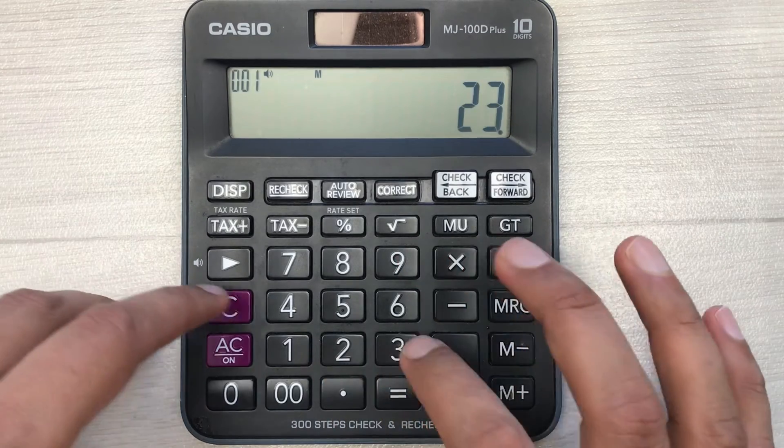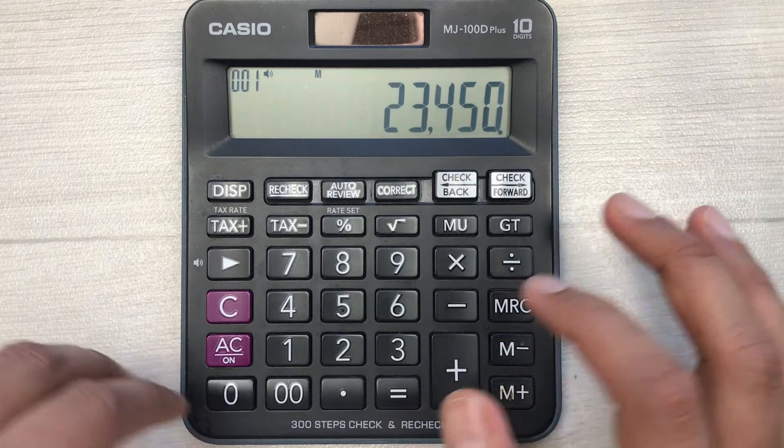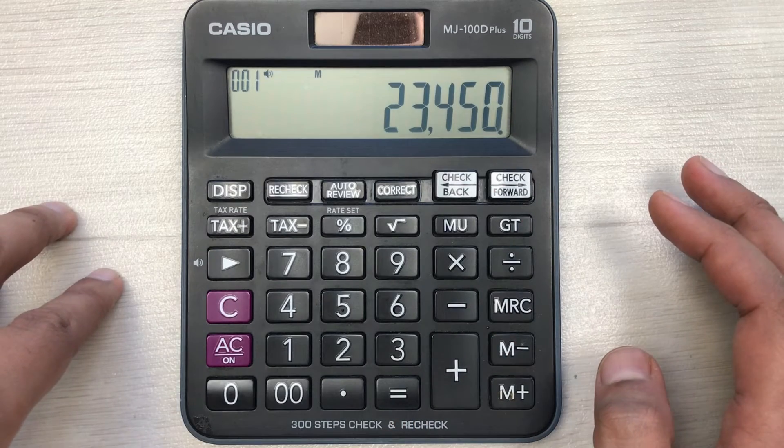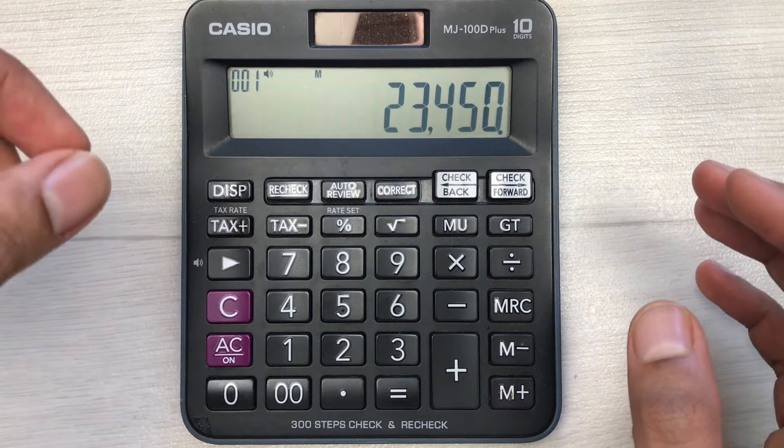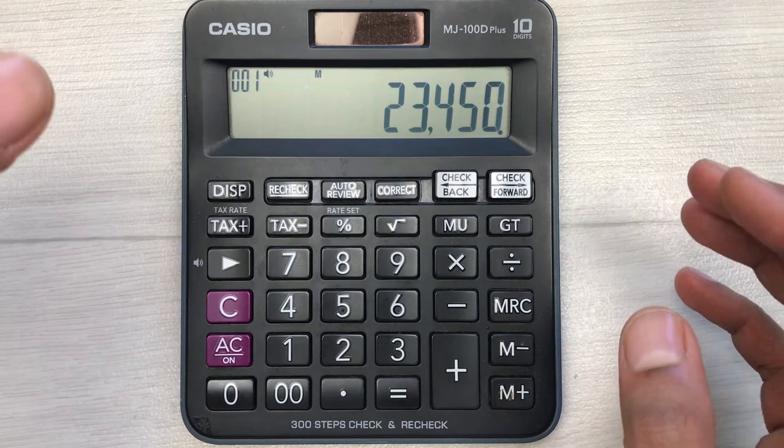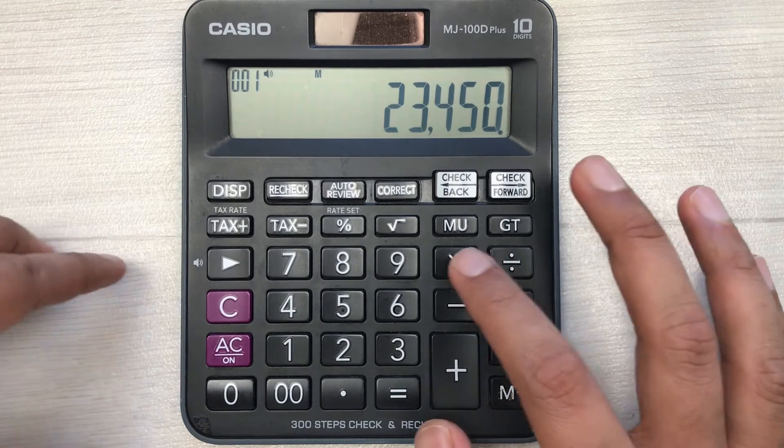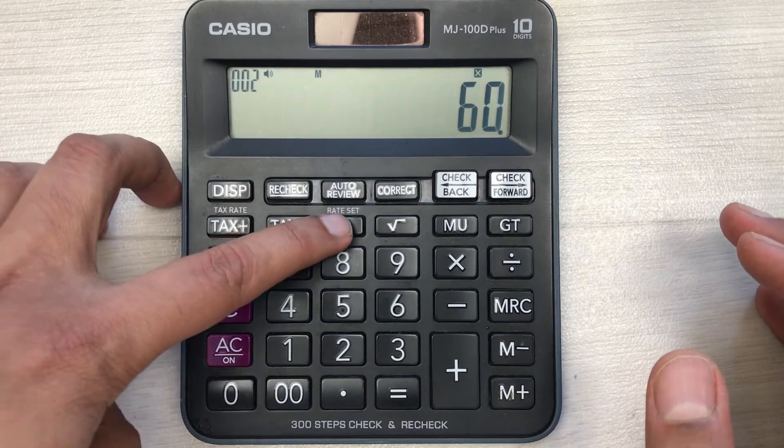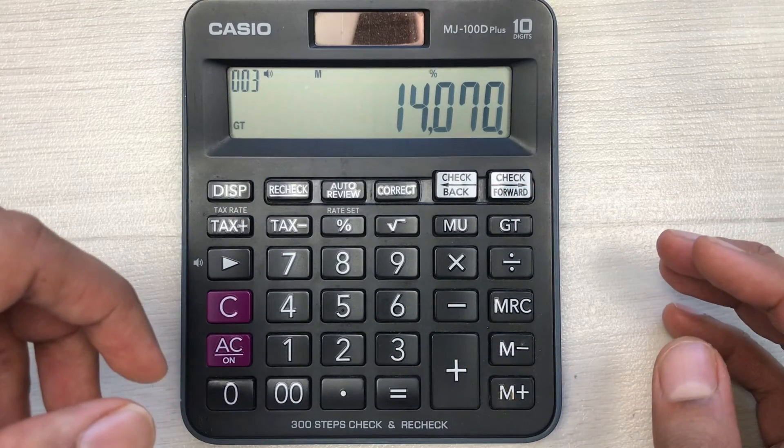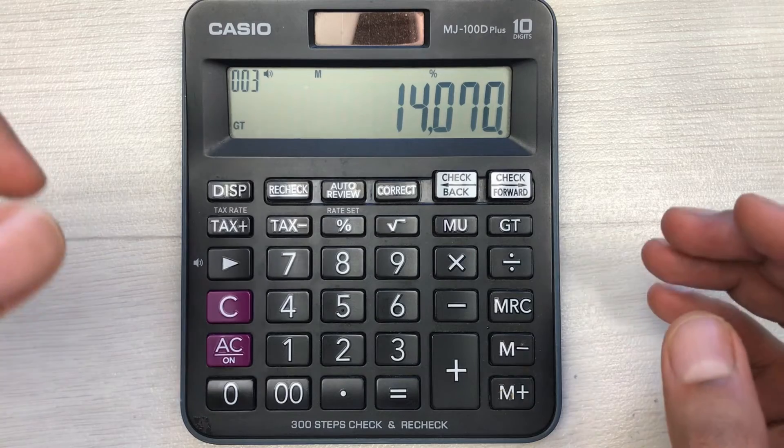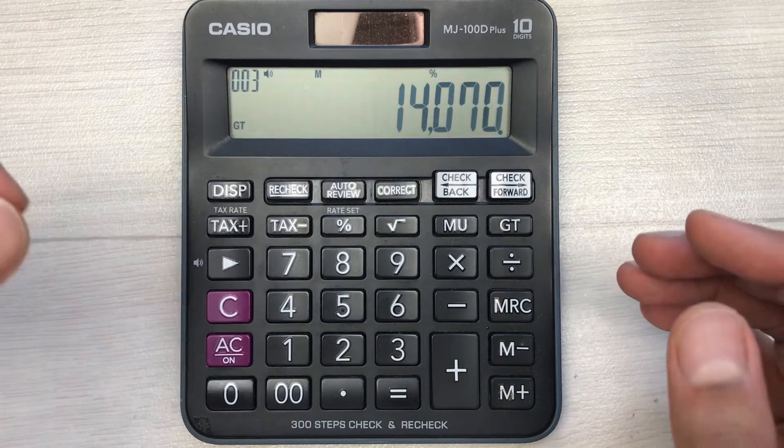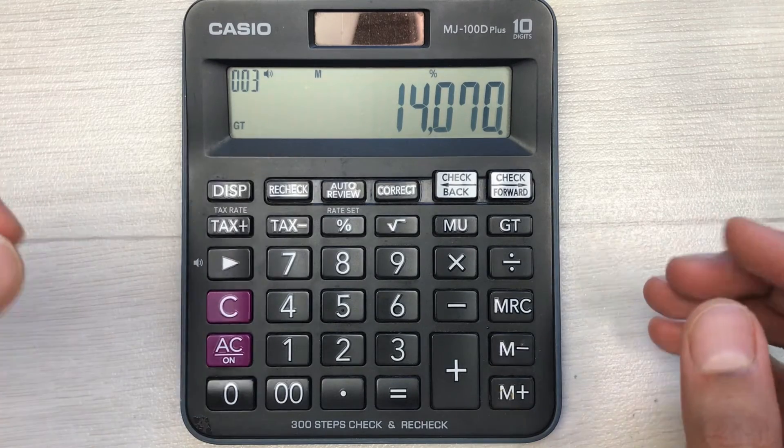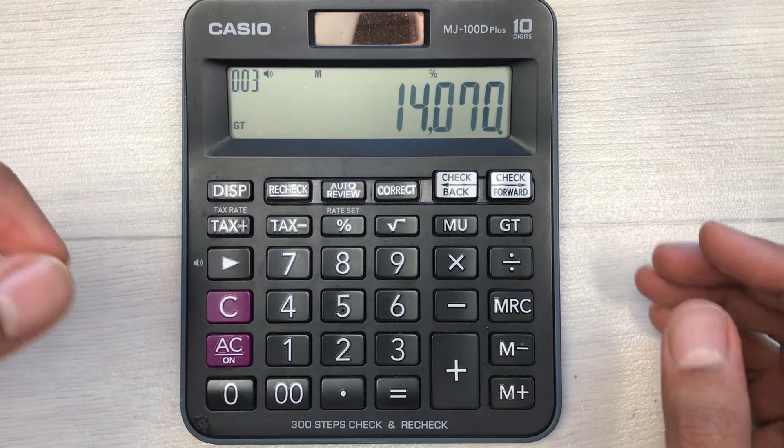Same thing you have to do. You have to multiply it with 60, then you have to press this percentage button. So here is the final answer. After 40% discount, the final amount is 14,070. This is how you can calculate the 40% discount on your calculator.